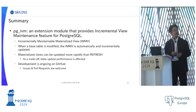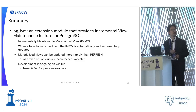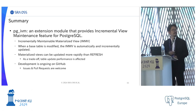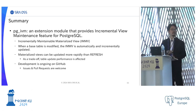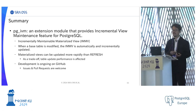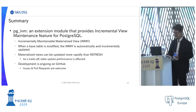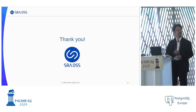In summary, PGIVM is an extension for implementing incremental view maintenance. When a base table is modified, the view is automatically and incrementally updated. This is much more rapid than a full refresh, but there is a trade-off. Development is ongoing on GitHub — issues and pull requests are welcome.